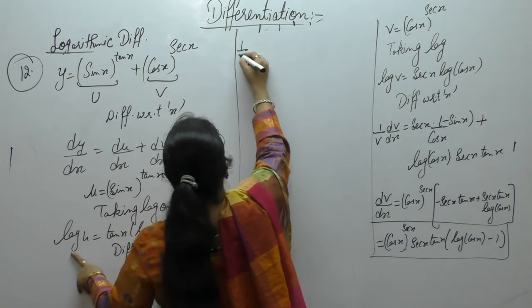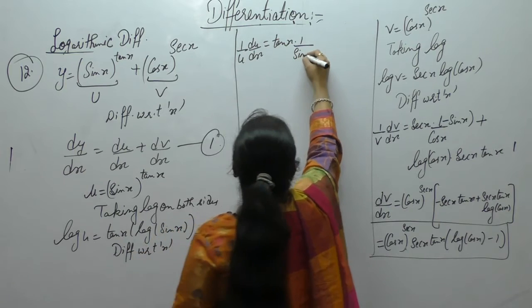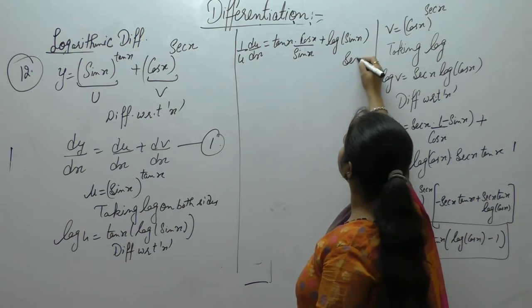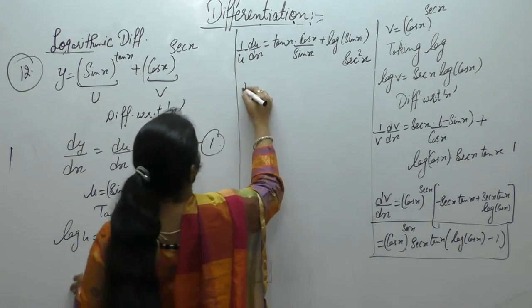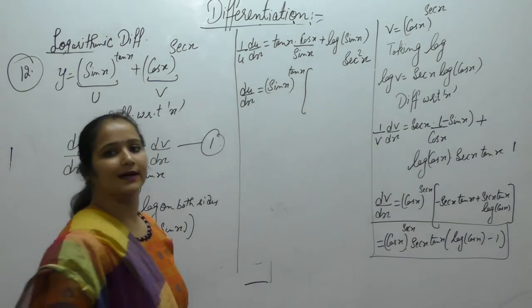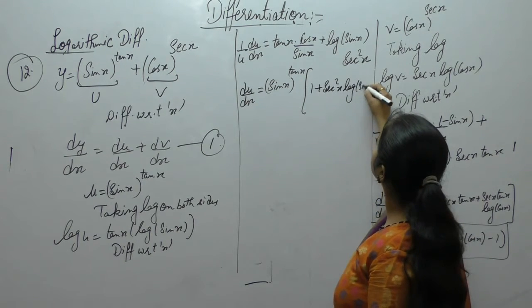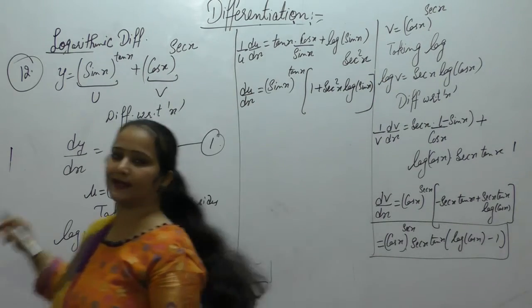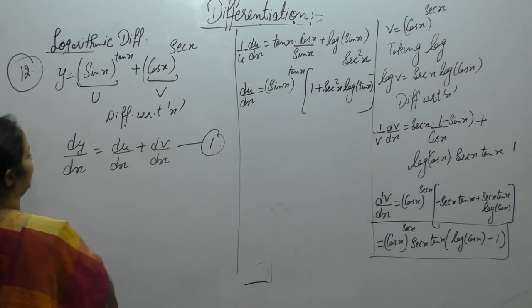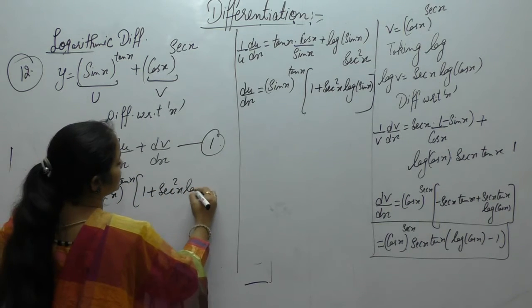Now du/dx: derivative of log(u) = 1/u · du/dx. First function tan(x), derivative of log(sin x) = 1/sin(x), derivative of sin is cos(x). Log(sin x) as it is, derivative of tan x is sec²(x). So du/dx = u · [cos(x)/sin(x) + sec²(x) · log(sin x)] = sin(x)^tan(x) · [1 + sec²(x) · log(sin x)]. Now put the values of du/dx and dv/dx in equation 1. We get dy/dx = sin(x)^tan(x) · [1 + sec²(x) · log(sin x)].